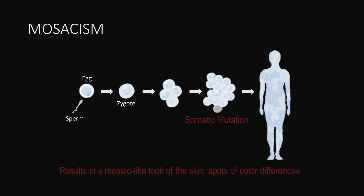Gonadal mosaicism, on the other hand, is a mutation that arises in the egg or the sperm only. One way to tell the difference is to see if parents or relatives have the disease. If they do not, then it must be gonadal.